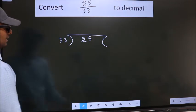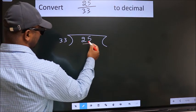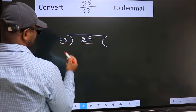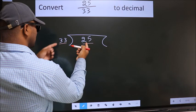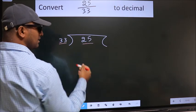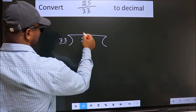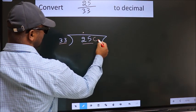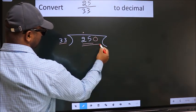Next, here we have 25, here 33. 25 is smaller than 33, so what we should do is put a dot here, take 0 here. So 250.